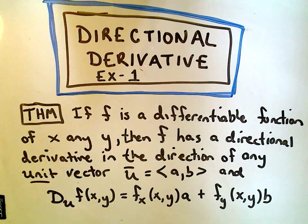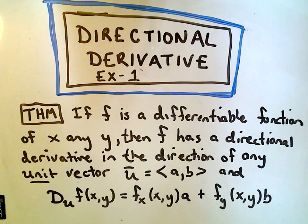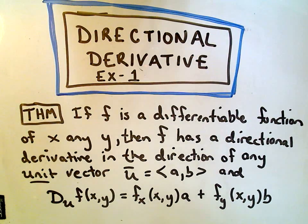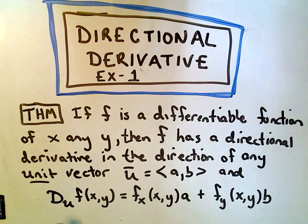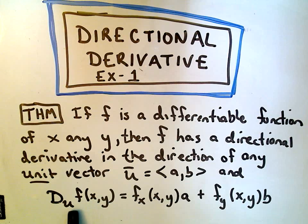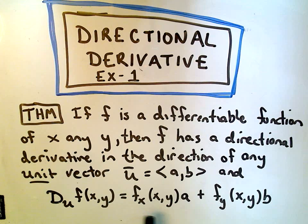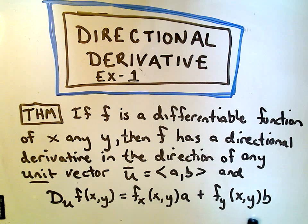Basically the theorem says if you have a differentiable function of variables x and y, that function has a directional derivative in the direction of any unit vector. This is going to be important, our unit vector being written with components a, b. We write the notation for the directional derivative. We have the directional derivative of the function f(x,y) in the direction of u. What we do is take the partial derivative with respect to x, evaluate it at our point, multiply that by the component a, do the same thing, take the partial with respect to y, evaluate it, multiply it by the component b.